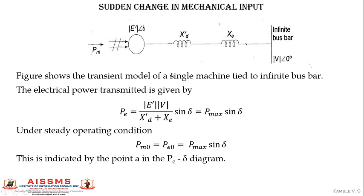This is a single line diagram showing a machine with its reactance X'd, a transmission line with reactance Xe, connected to an infinite bus bar. The voltage at the infinite bus bar is V at angle zero degrees. The generator produces electrical power at voltage E' at angle delta. The mechanical input power given to the generator is Pm.